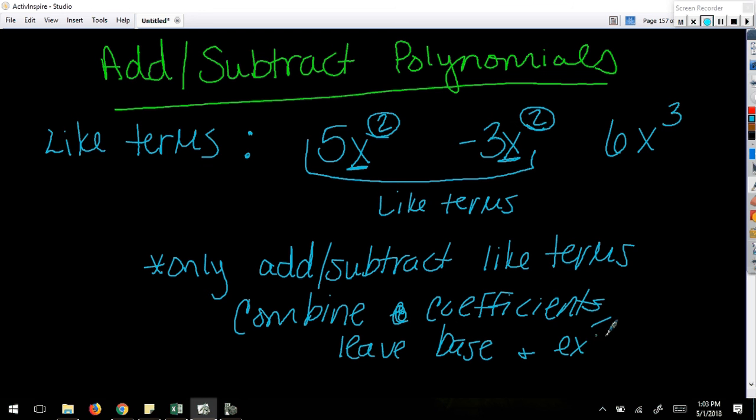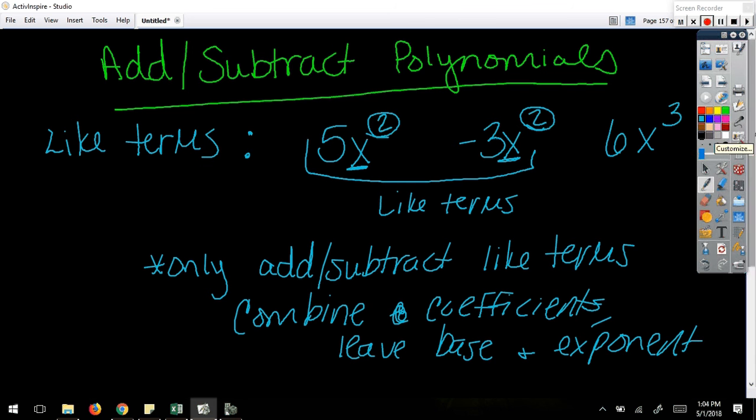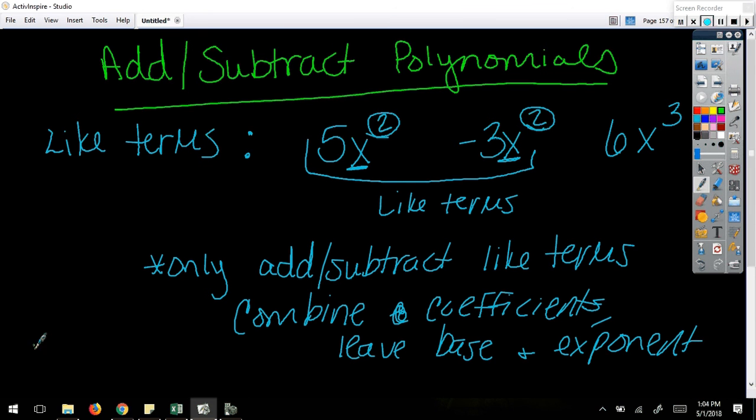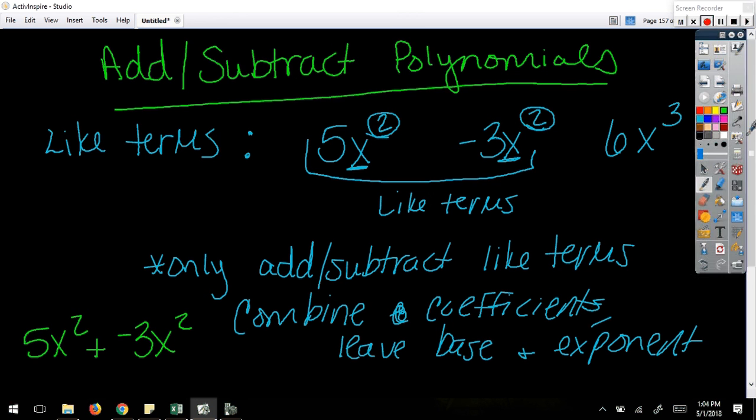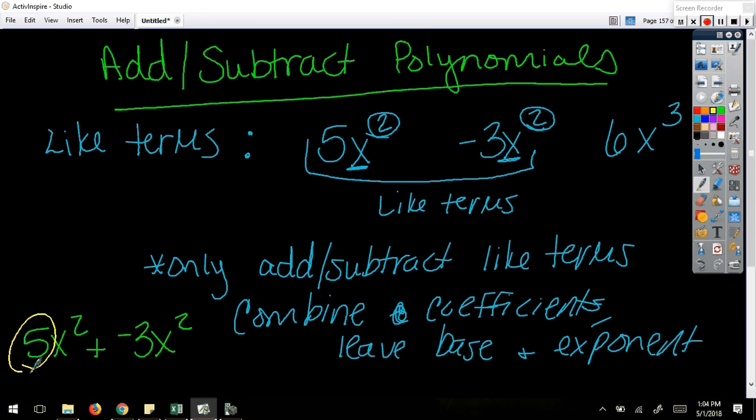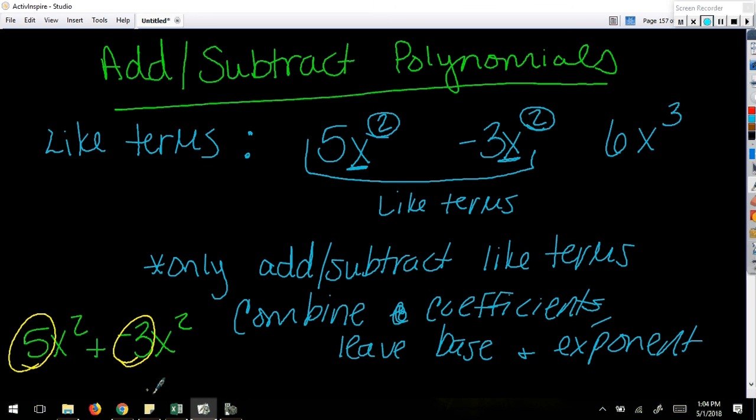If I were to add these two up here that I used as an example, the 5x² and -3x², if I wanted to add those together, what I would want to do is combine the coefficients that sit in front. So that is 5 and -3. That would give me 2, and then I leave that base and that exponent there as I combine.